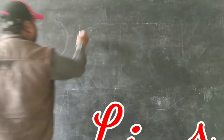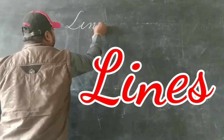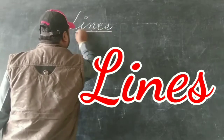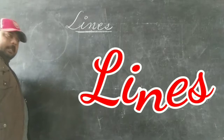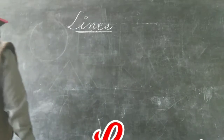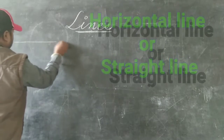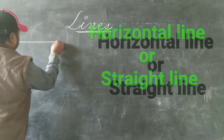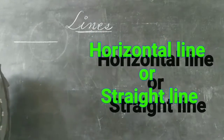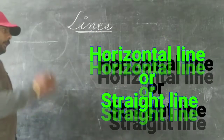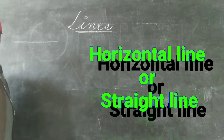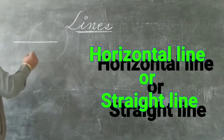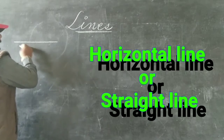Now they are going to learn some lines. What is a line? Do you know what it is? This is called a line, or this is called a horizontal line. We can also say that it is a straight line.